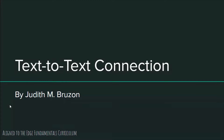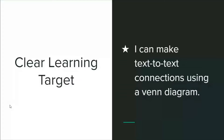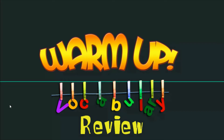We are going to start, as we always do, by reading our clear learning target: 'I can make text-to-text connections using a Venn diagram.' We will first read or listen to two separate passages and then use those passages to make text-to-text connections on a Venn diagram.